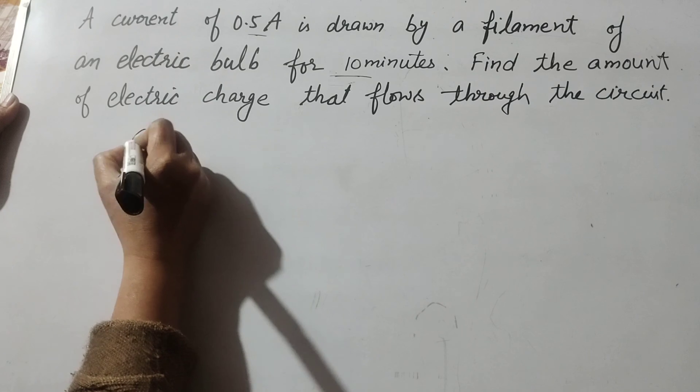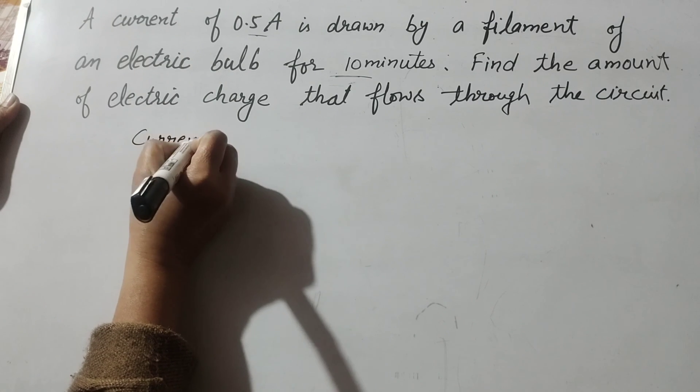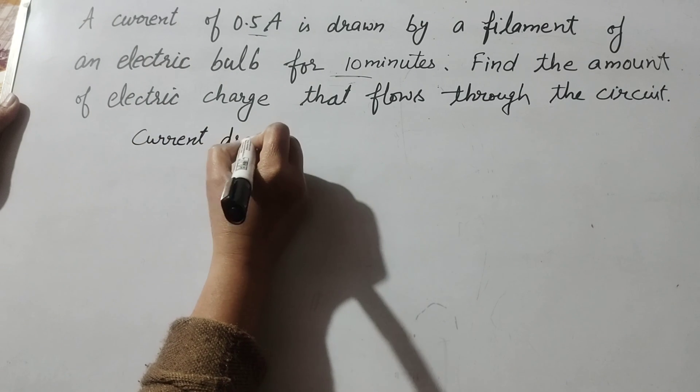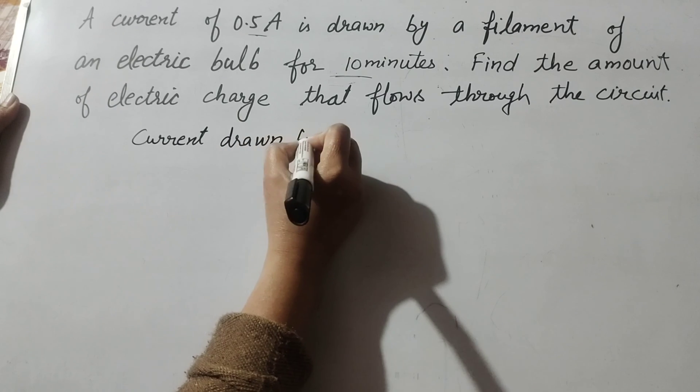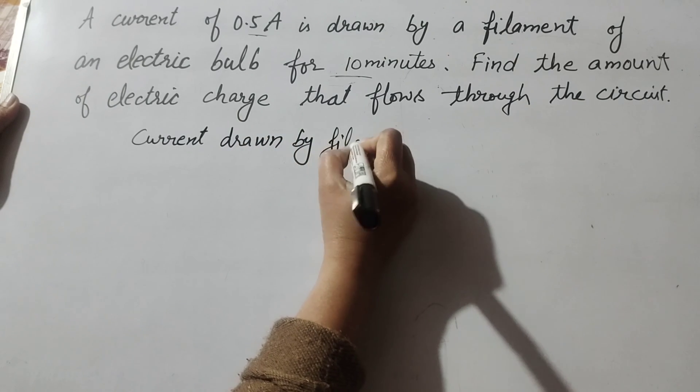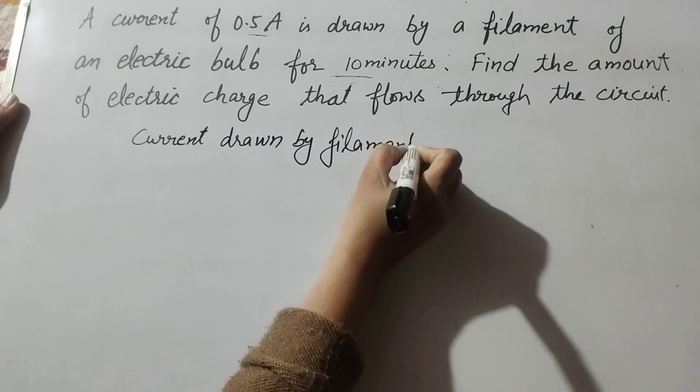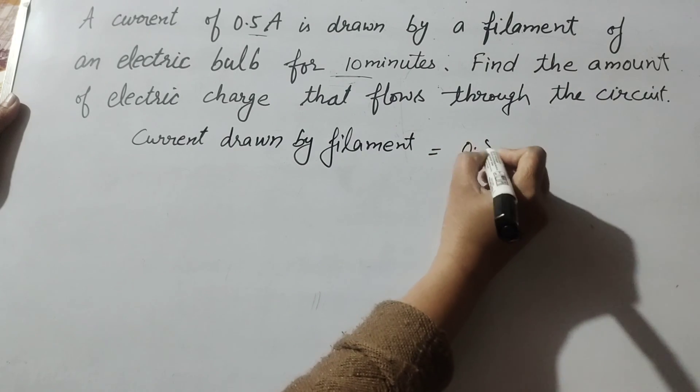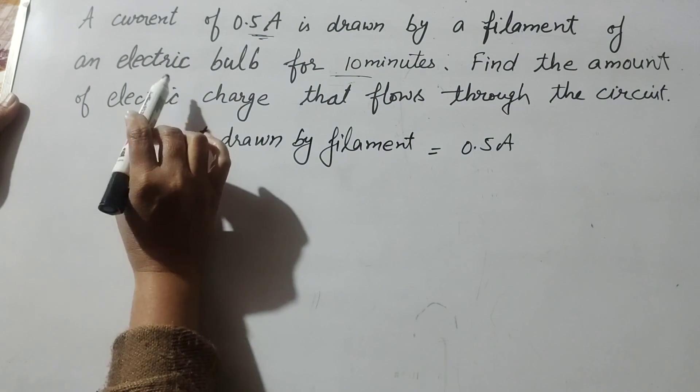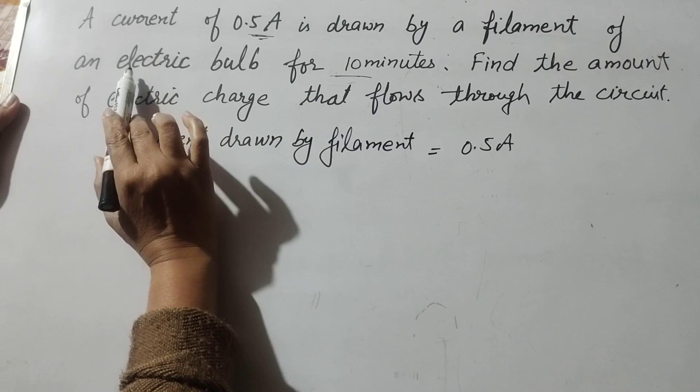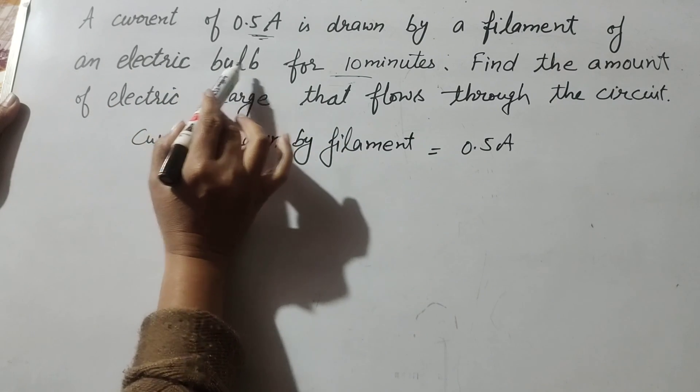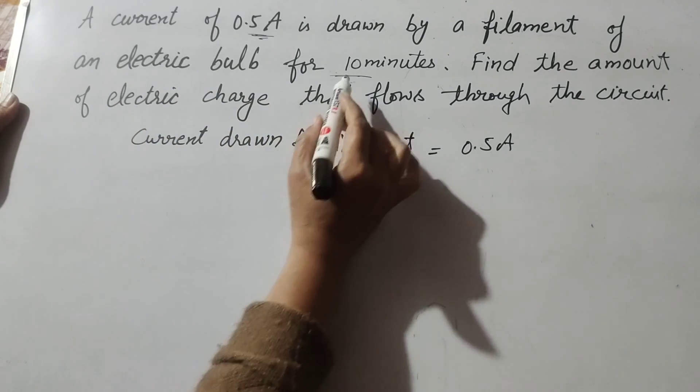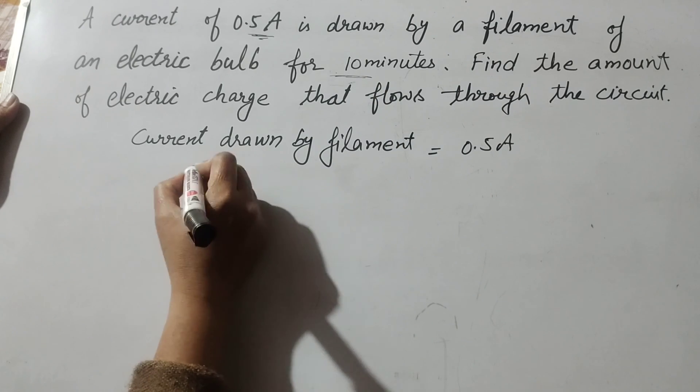So given is the current. Current drawn by filament, it is equal to 0.5 ampere. This is given. And current passes through the filament of an electric bulb for 10 minutes. So time is given. Time is 10 minutes.